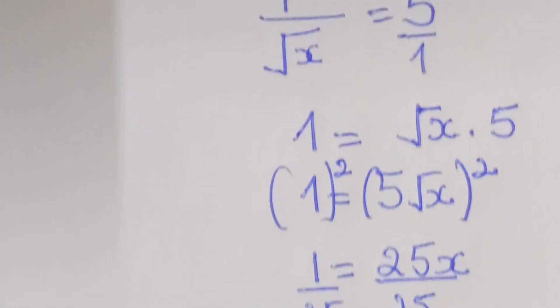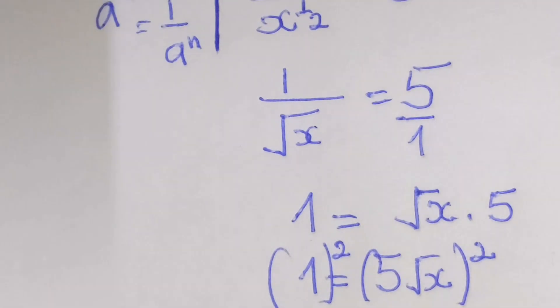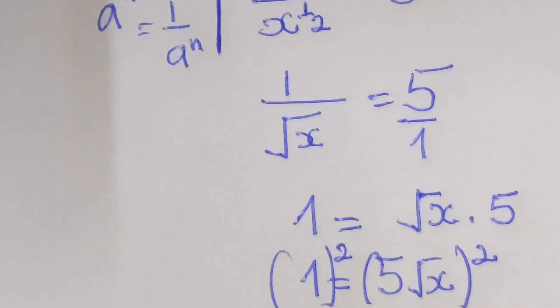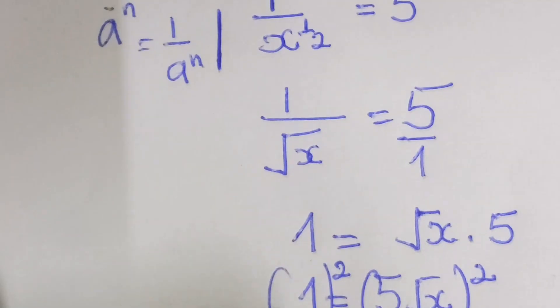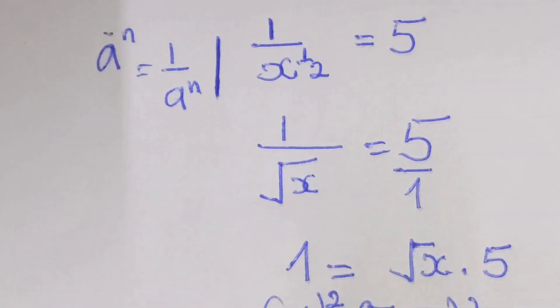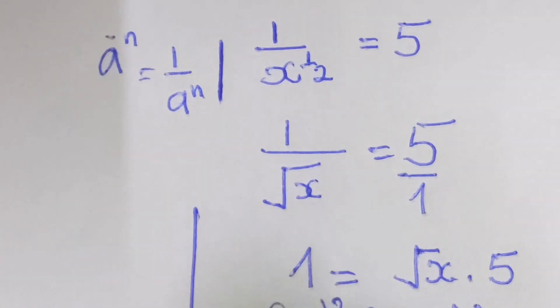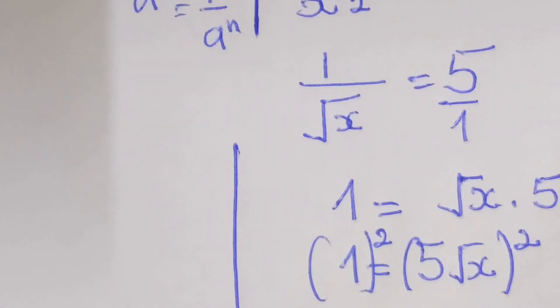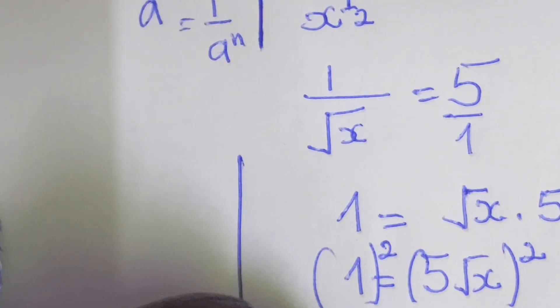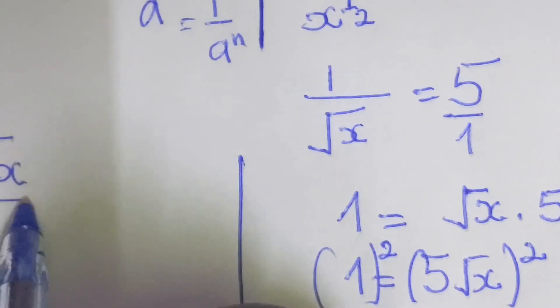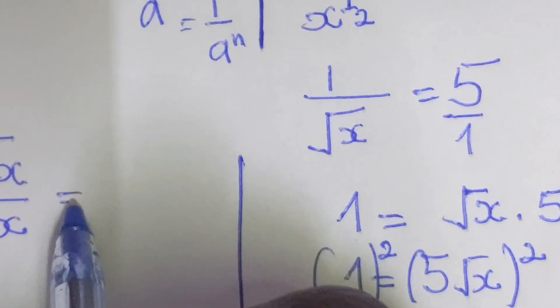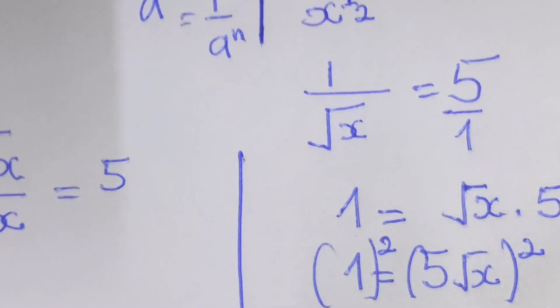But we have to check, always check if the answer we have got, if it is correct. Then right here we have given that square root of x over x equal to 5.